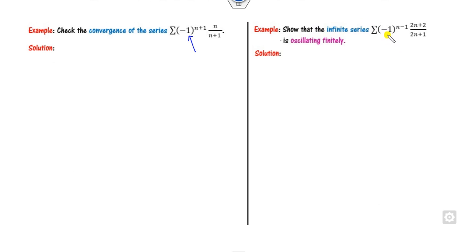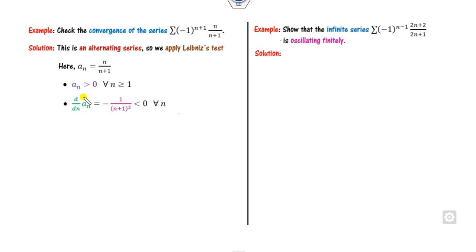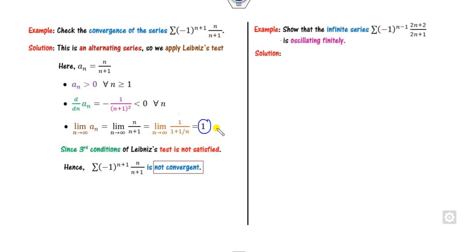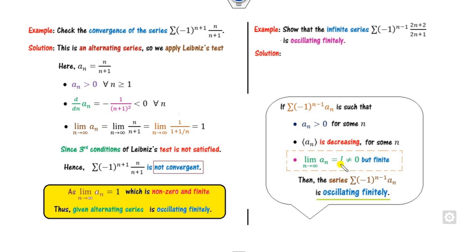Again this is an alternating series, so we apply the three-step rule. a_n is clearly greater than 0, so the first property is satisfied. Taking the derivative, it is negative because this number is always positive, so due to the minus it is less than 0. However, the limit is 1, which is non-zero. This means the third condition of the Leibniz test is not satisfied. Therefore the series is not convergent. Since the limit is a finite non-zero number, we call this an oscillatory finitely series.